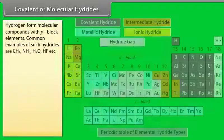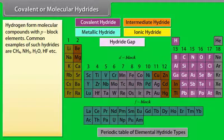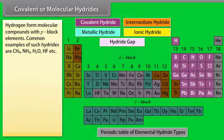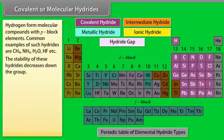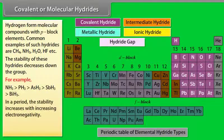Covalent or molecular hydride. Hydrogen forms molecular compounds with P-block elements. Common examples of such hydrides are CH4, NH3, H2O, HF, etc. The stability of these hydrides decreases down the group. For example. In a period, the stability increases with increasing electronegativity.